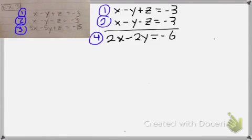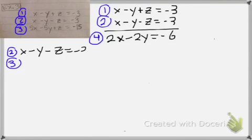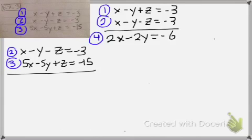Now, I need to eliminate my z's again. So, I'll do that with equations 2 and 3. Equation 2, x minus y minus z equals negative 3. And then equation 3, 5x minus 5y plus z equals negative 15. When I add vertically, I get 6x minus 6y equals negative 18. And I will call this equation 5.